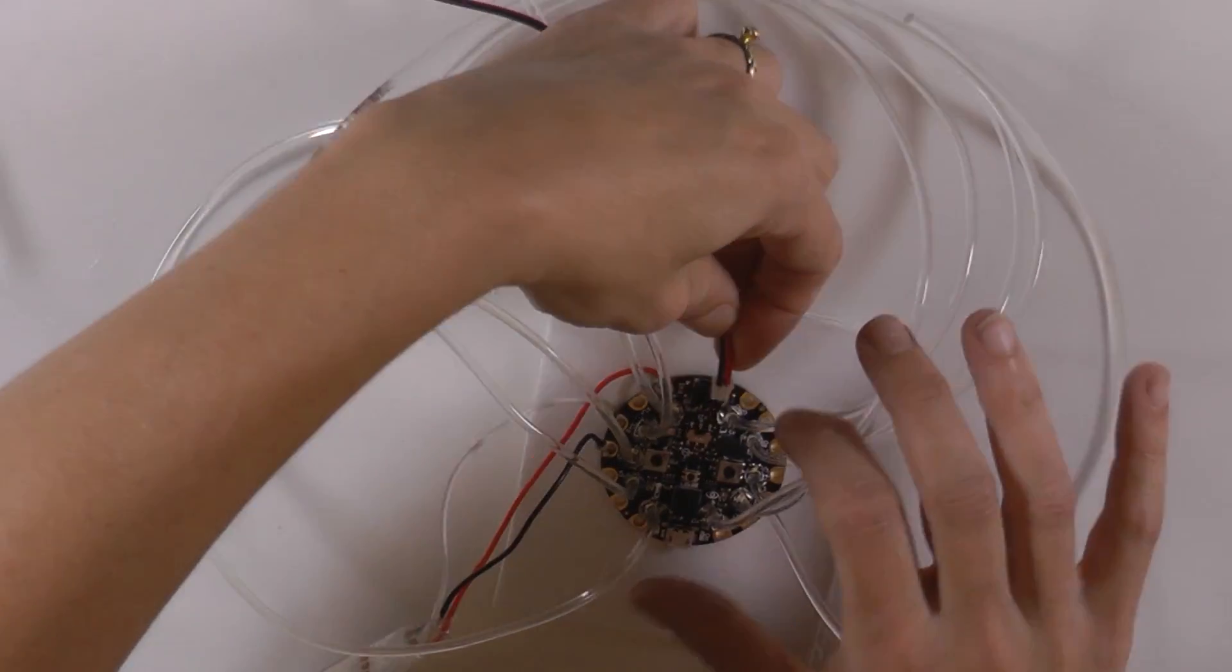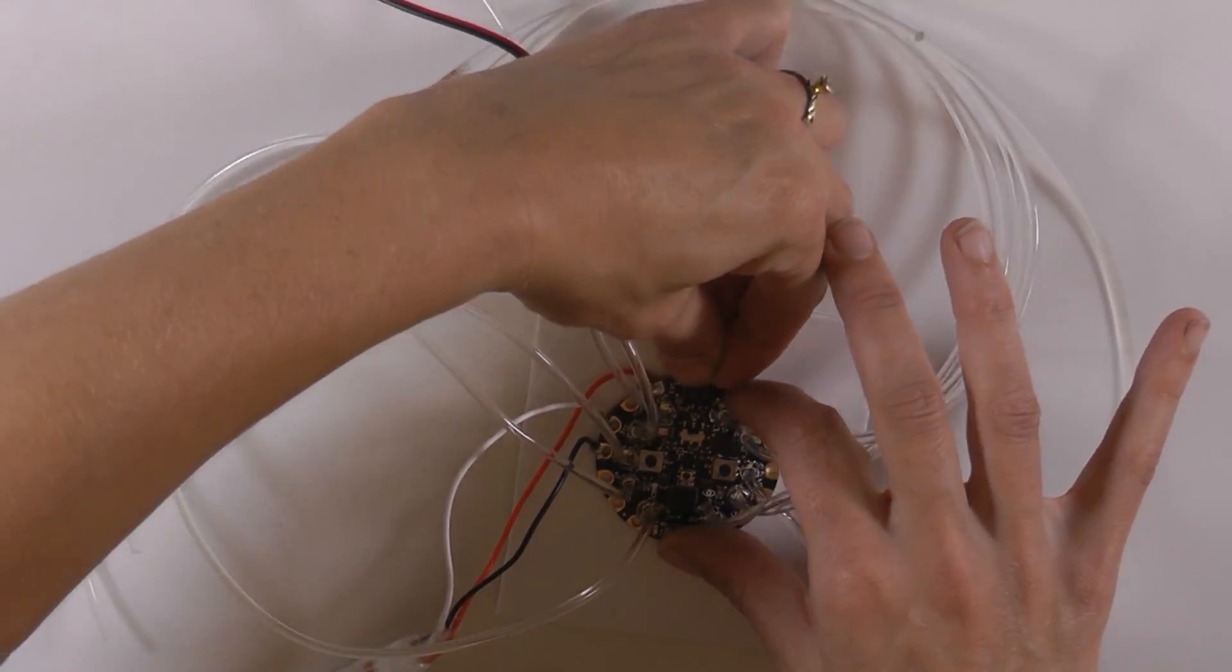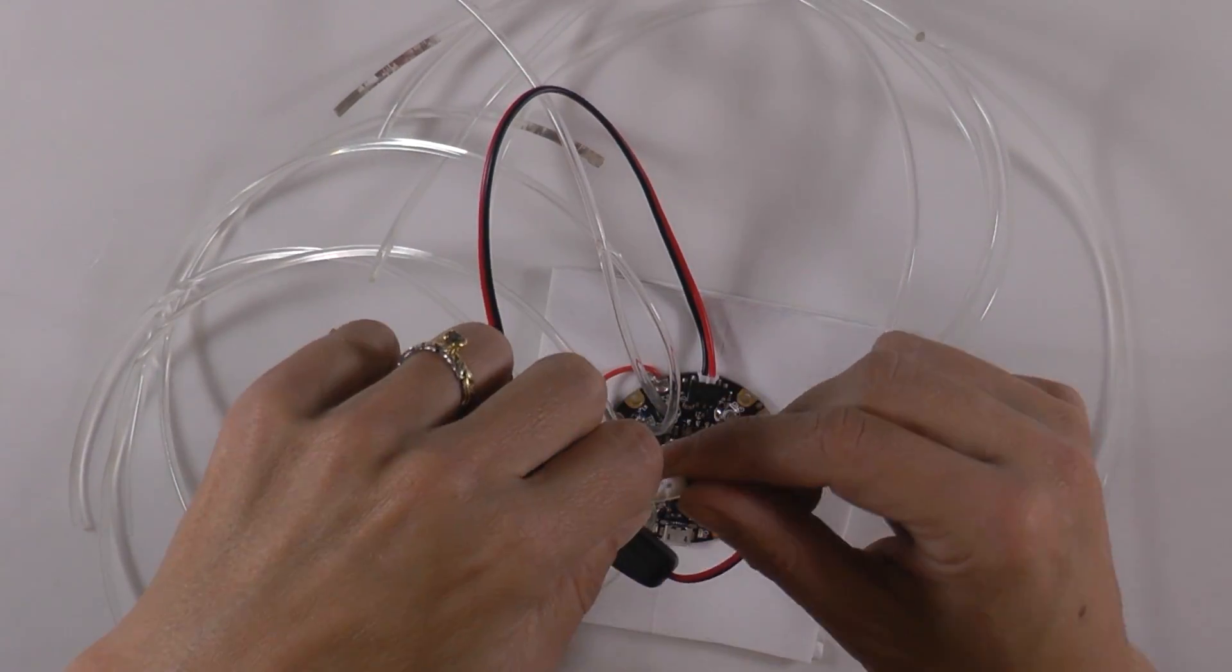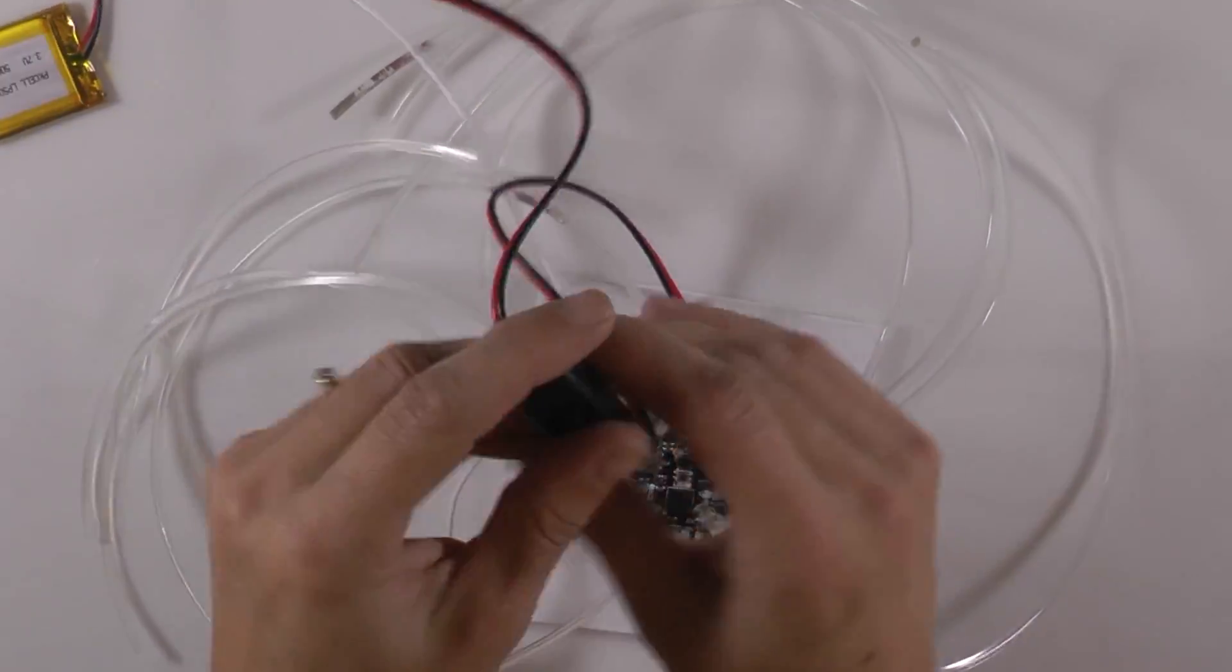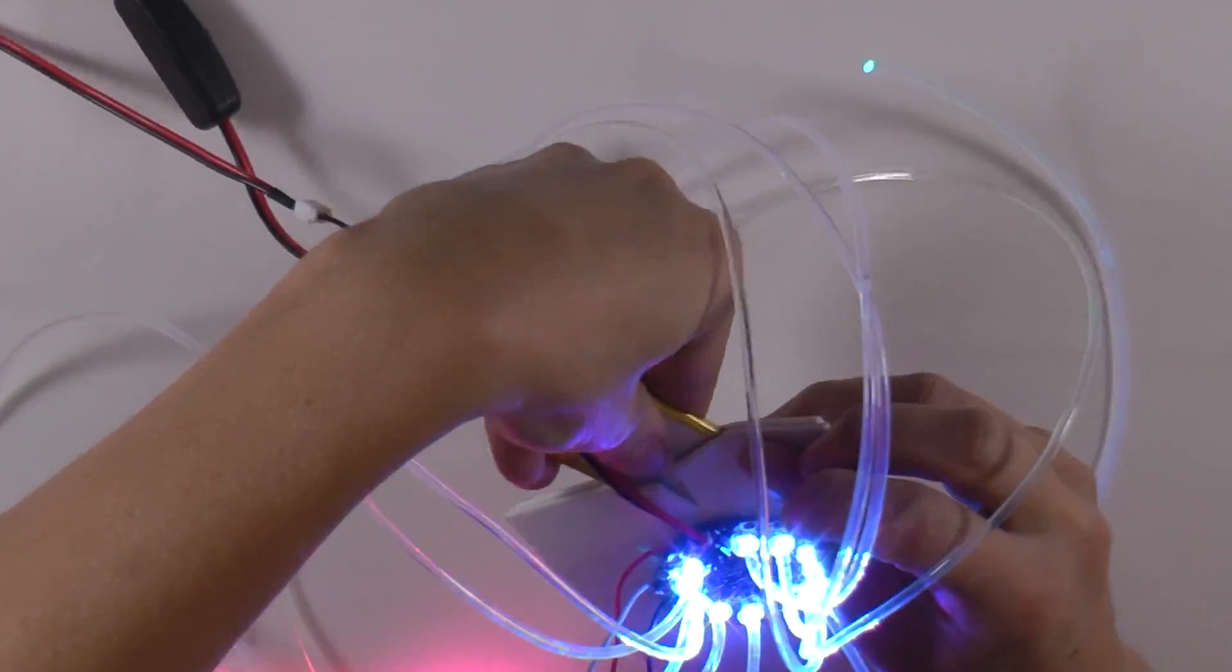Plug your battery extension cable into the circuit playground and plug in your battery to the other end. Test to be sure it's all working, and then slip the battery inside the pocket.